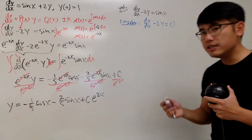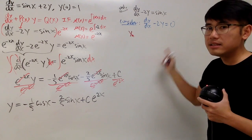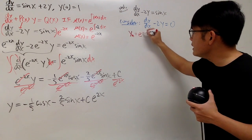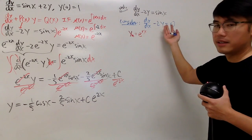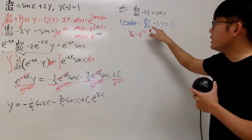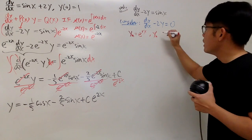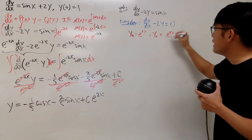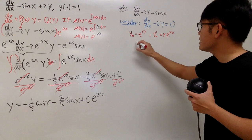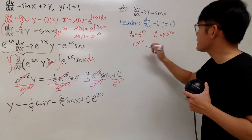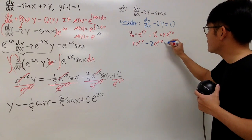For the homogeneous solution y_h, when the coefficients are just constants, we use y_h equal to e to the rx as our building block — this form will satisfy the differential equation. We need the first derivative: y_h' equals r times e to the rx. Substituting in, we get r times e to the rx minus 2 times e to the rx equals 0.